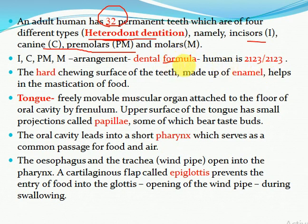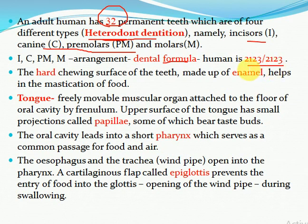The arrangement of incisors, canines, premolars, and molars is called the dental formula. The human dental formula is 2123/2123 — this means 2 for incisor, 1 for canine, 2 for premolar, and 3 for molar. This formula represents the upper jaw half and lower jaw half arrangement. So the dental formula 2123/2123 is very important — you need to remember this, as well as dental formulas of 2–3 other animals for competitive examinations.